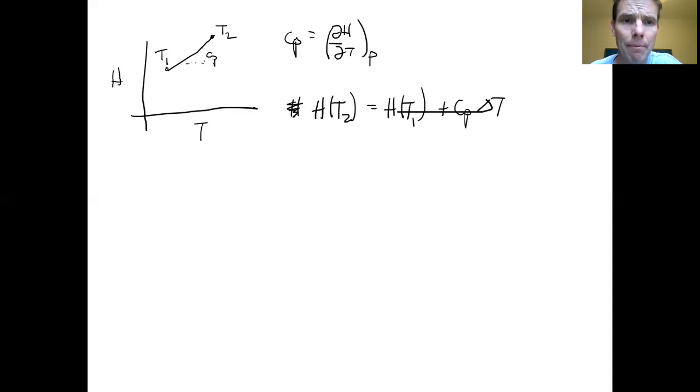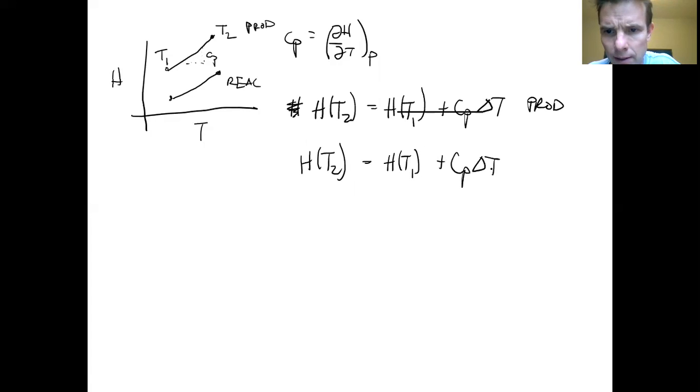Now, I could imagine this happening for the products, right? So, this could be for the products. And you would get a similar expression for the reactants. So, again, here's T1, here's T2. You get something which looks like this. H at T2 equals H at T1 plus Cp delta T. And this is all referring to the reactants.